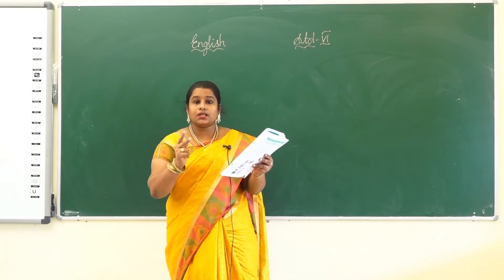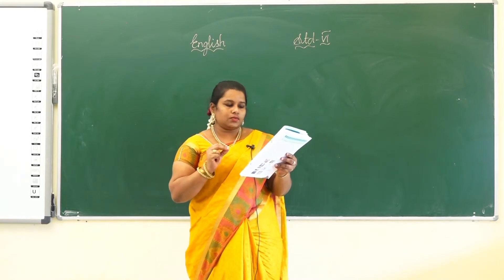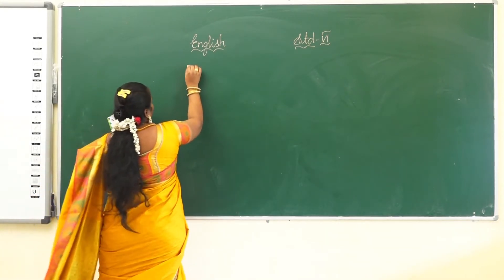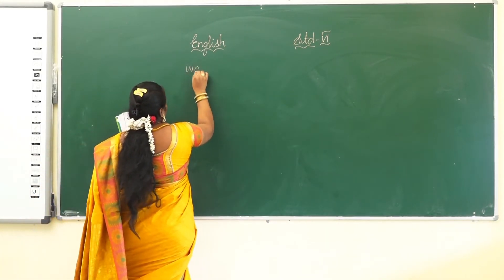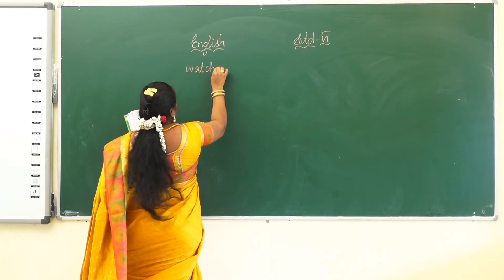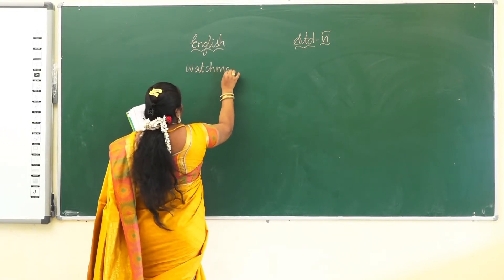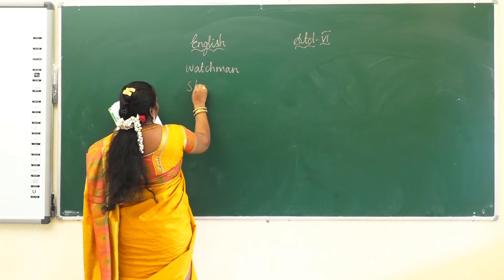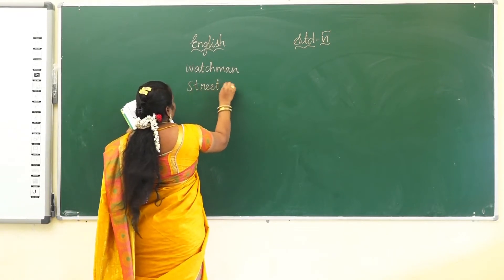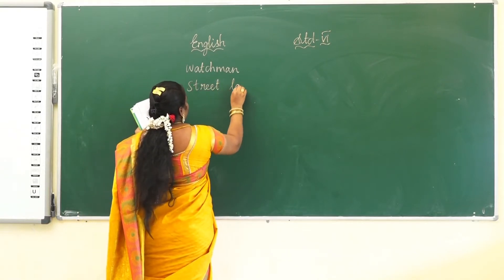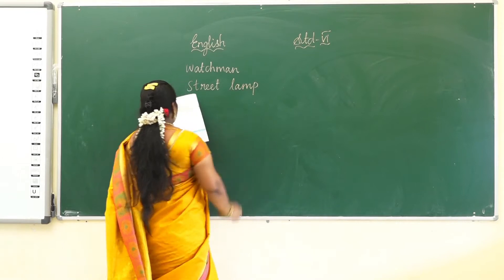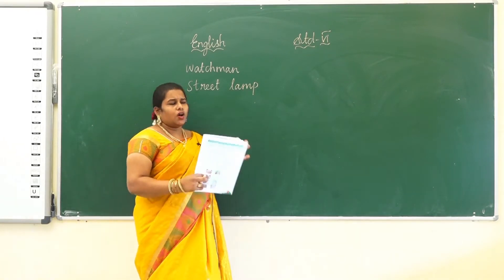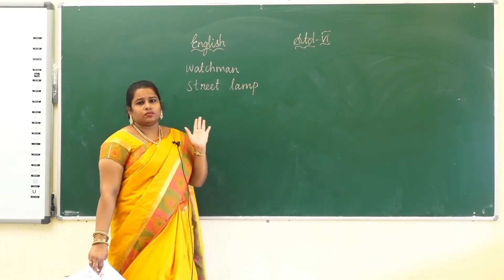See here, two words are bold here. What are the words? Watchman, street lamp. Two words are here.